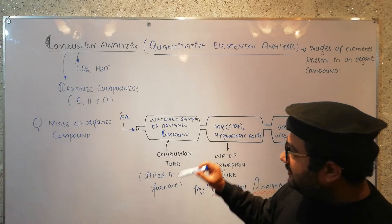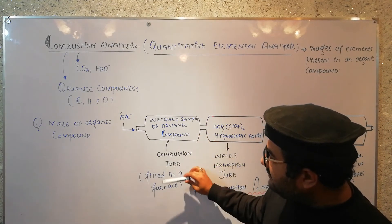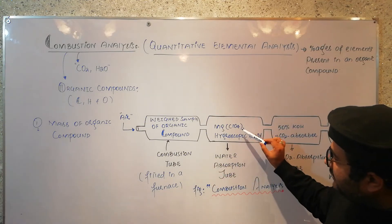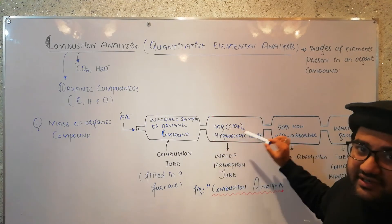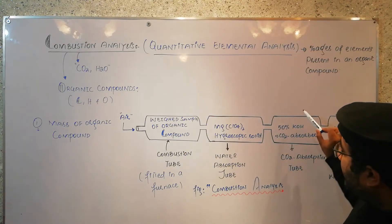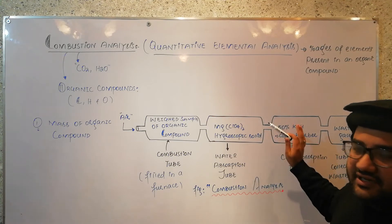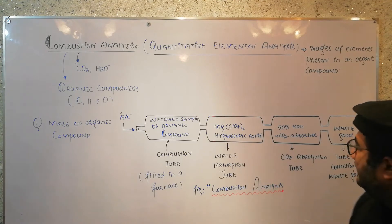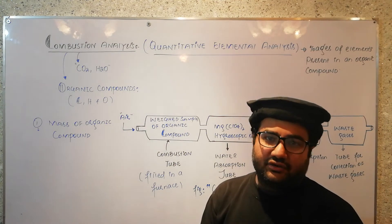The procedure: weigh the sample, put it into the combustion tube, and fit the combustion tube in a furnace. The magnesium perchlorate is placed in the second tube and the whole tube is weighed. Similarly, 50% KOH is placed in the third tube and the whole tube along with the KOH is weighed. The weight of these two tubes is noted down, and the last tube is for collection of waste gases. All these tubes are connected together.